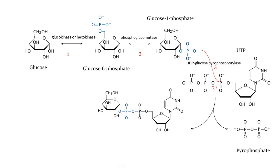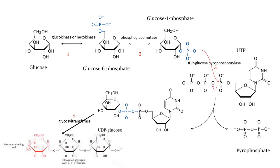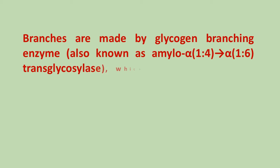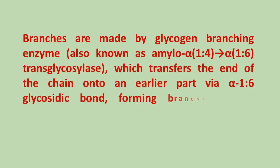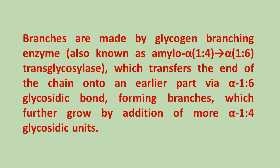If activated by insulin, glycogen synthase proceeds to clip glucose from the UDP-glucose complex and onto the glycogen molecule. Glycosyl transferase adds UDP-glucose into the growing chain of glycogen towards the non-reducing end, at carbon number 4 of the terminal glucose residue. Once a chain of 8 glucose monomers is formed, glycogen synthase binds to the growing glycogen chain and adds more UDP-glucose, forming additional alpha-1,4 bonds. Branches are made by glycogen branching enzyme, also known as amylo alpha-1,4 to alpha-1,6 transglycosylase, which transfers the end of the chain onto an earlier part via an alpha-1,6 glycosidic bond, forming branches that further grow by addition of more alpha-1,4 glycosidic units.